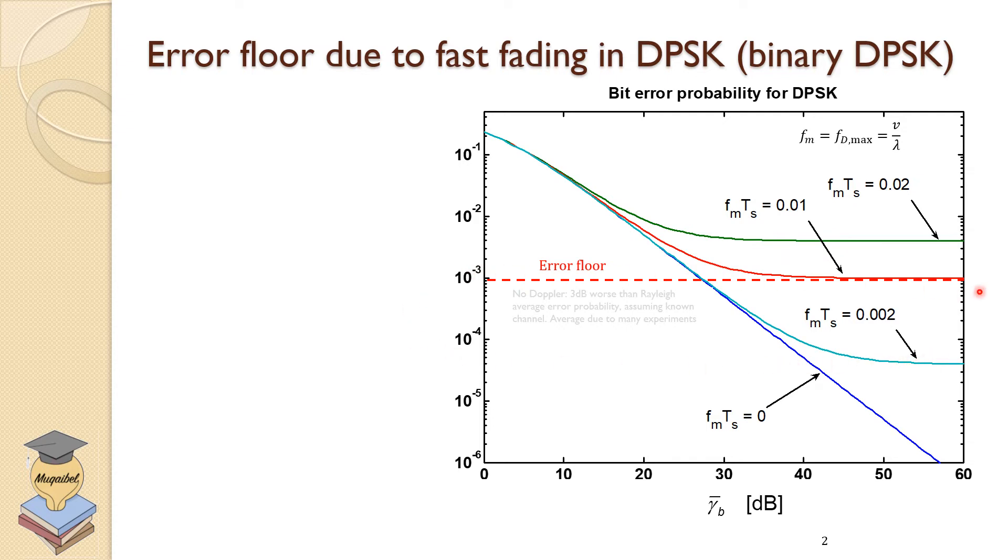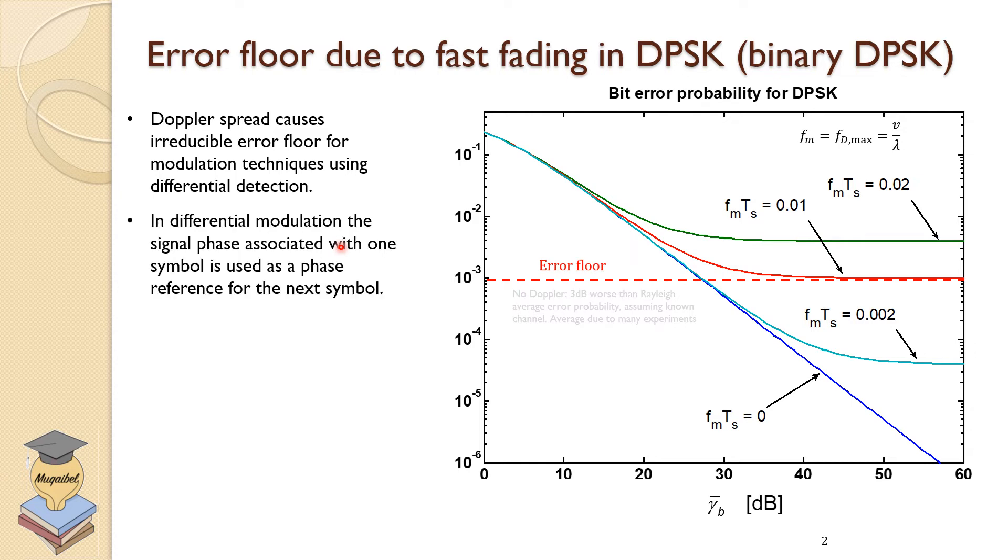Error floor means that there is a certain floor that you cannot go below because you reach the floor. And now this will improve our understanding of the impact of fading. Once we lose the frequency, so fast fading channels are a problem. So Doppler spread causes irreducible error. You cannot reduce it. It's just a floor for modulation technique using differential detection.